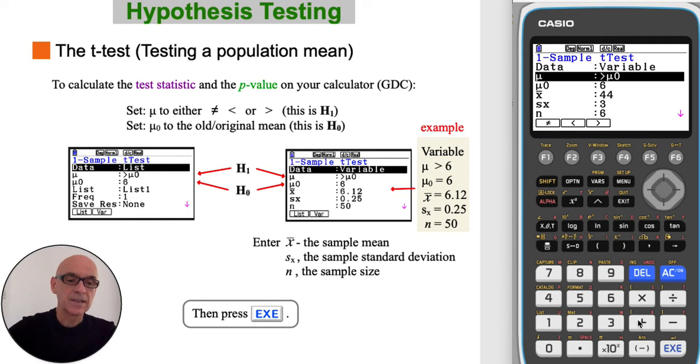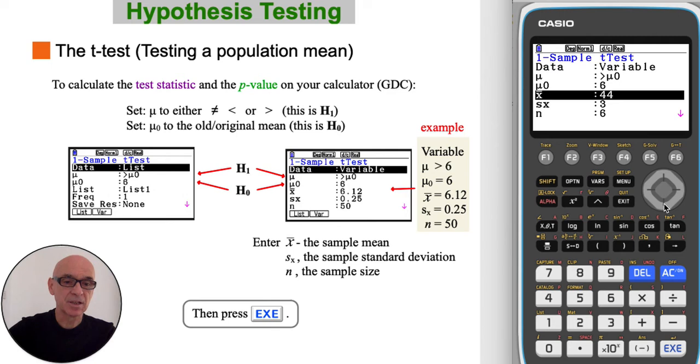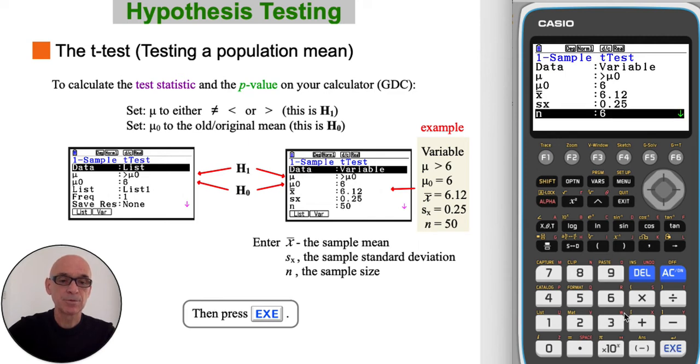Then scroll down and set the summary values. The sample mean in the example was 6.12. The sample standard deviation in the example was 0.25. And the sample size was 50. Then press execute to perform the test.